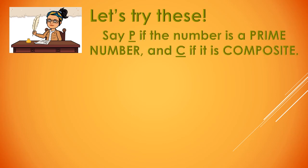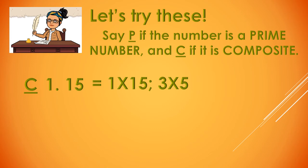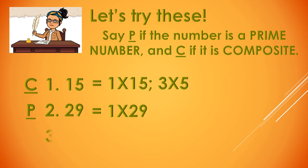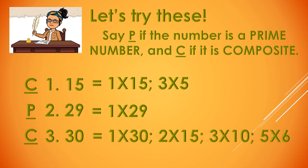Let's try this. Say P if the number is a prime number, and C if it is composite. Number 1: 15. Is it a P or a C? It is a C, because it has more than 2 factors. Number 2: 29. It is a P — it only has 2 factors, 1 and itself. Number 3: 30. It is a C, because it has more than 2 factors.